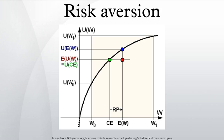Hyperbolic absolute risk aversion (HARA) is the most general class of utility functions that are usually used in practice. CARA and quadratic utility all exhibit HARA, and are often used because of their mathematical tractability. A utility function exhibits HARA if its absolute risk aversion is a hyperbolic function. The solution to this differential equation gives the corresponding utility function.